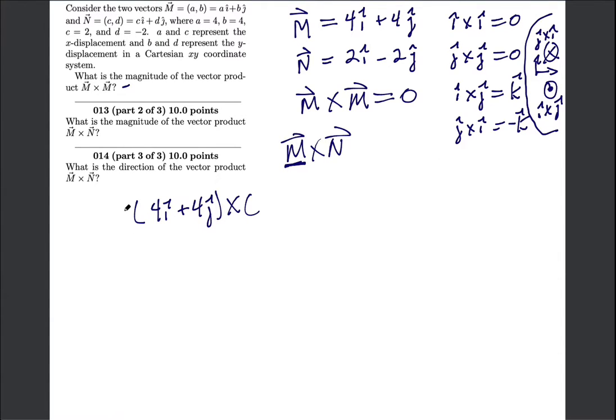So this one is j cross i-hat and this one is i-hat cross j-hat. So be careful about those. All right, so then we wrote down M, let's write down N: 2i-hat minus 2j-hat. And that equals the cross product of the two.